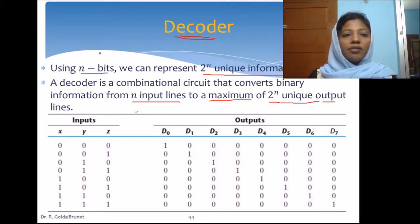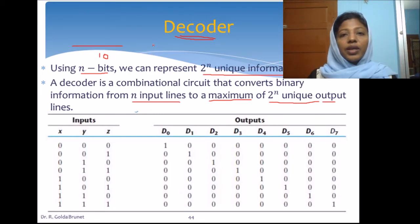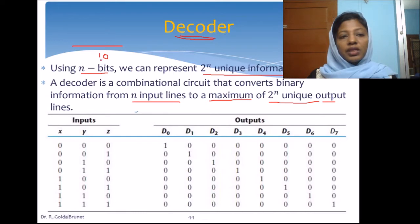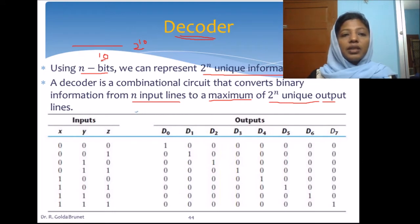Where is it used? In memories. For example, say we have many memory locations and a 10-bit long address. We give one 10-bit long input and want to uniquely identify the memory location addressed by these 10 bits. We need to convert this 10-bit input to one of 2 power 10 output lines so we can identify which memory location is represented by this 10-bit address. Decoder is used in such scenarios.